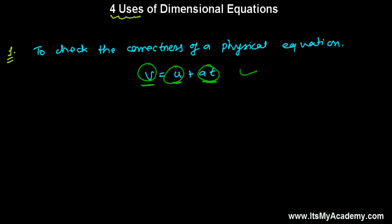We'll be discussing in detail how to check the correctness of an equation later. We'll be learning all four uses one by one. The second use is to derive a relationship between the physical quantities.